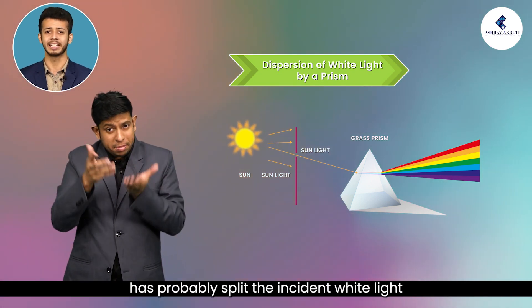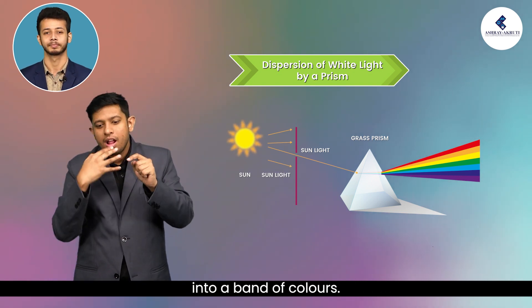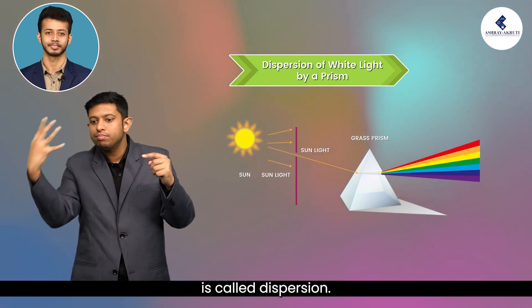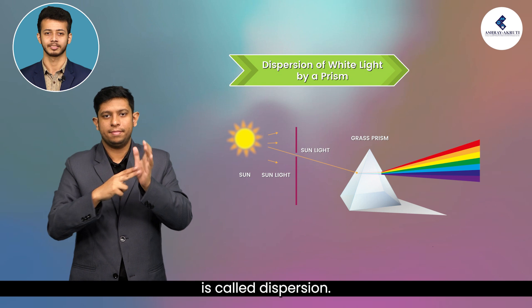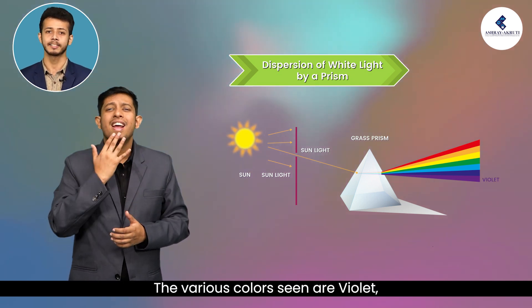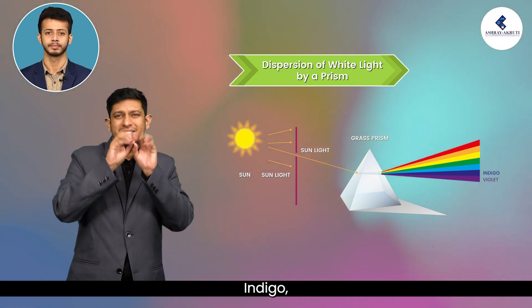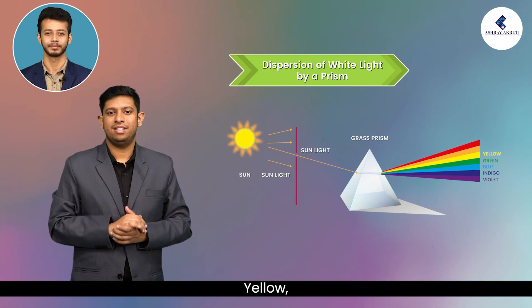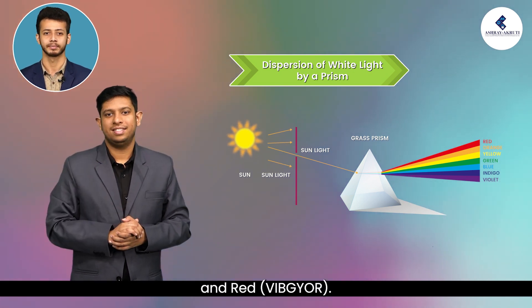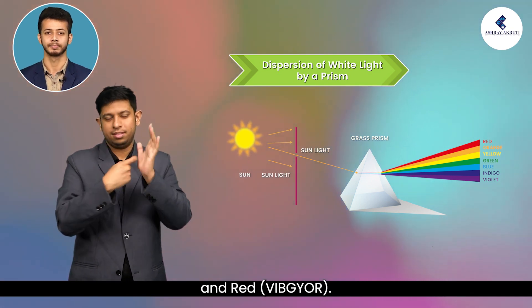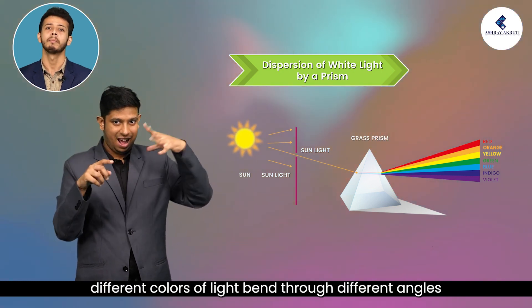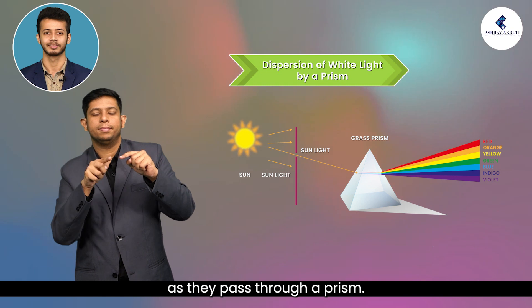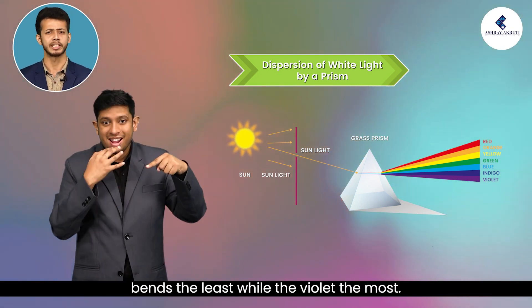The prism has split the incident white light into a band of colours. This splitting of light into its component colours is called dispersion. The various colours seen are Violet, Indigo, Blue, Green, Yellow, Orange and Red — VIBGYOR. This is because different colours of light bend through different angles as they pass through a prism. The red light bends the least while the violet bends the most.